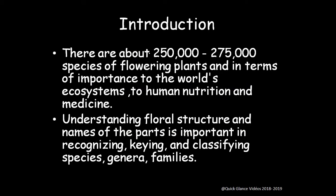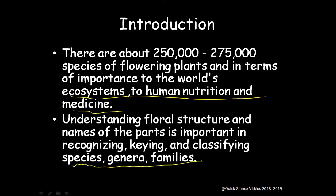There are about 275,000 species of angiosperm flowering plants. They are important for our ecosystem as well as human nutrition and medicines. Understanding the floral structure and names of the parts is important in recognizing, keying, and classifying species, genera, and families. This floral part is very much involved in the classification of the plant kingdom.